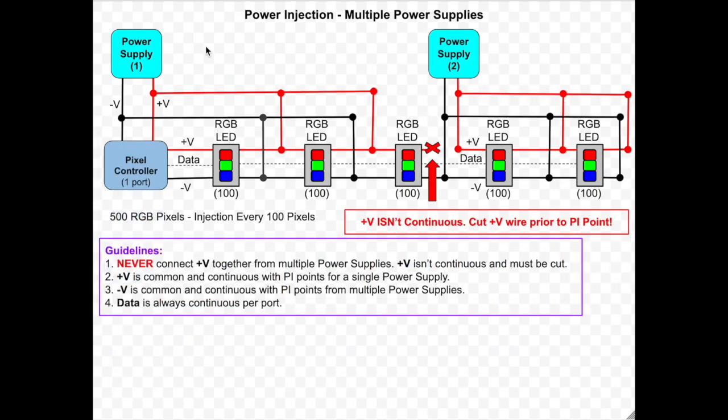Here is another example of using multiple power supplies. In this example there are two power supplies on a long string of pixels. Power supply one is powering the controller and the first 300 pixels. Power supply two is powering the last 200 pixels. The guidelines for using power injection with multiple power supplies are still the same.